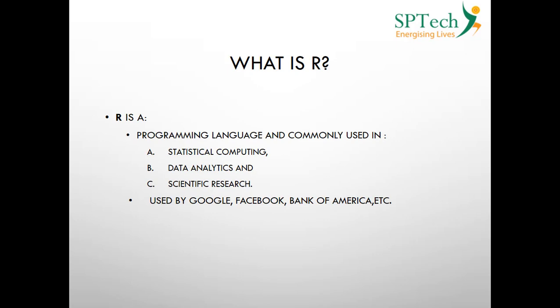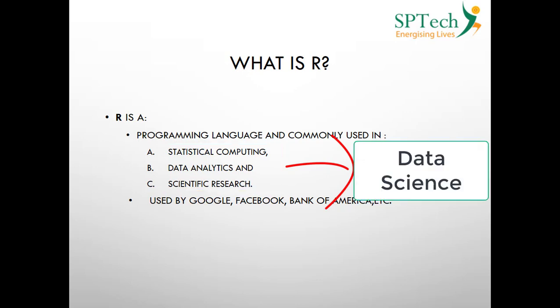Every programming language has a purpose. R programming language is basically used for statistical computing, data analytics, and scientific research. These are the three wide areas where we use R. Put all these together and we can call it data science, so R is predominantly used as a data science platform.